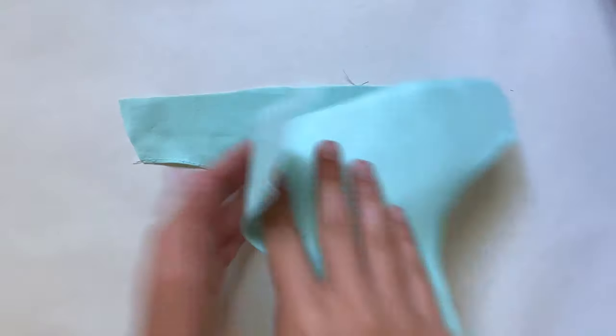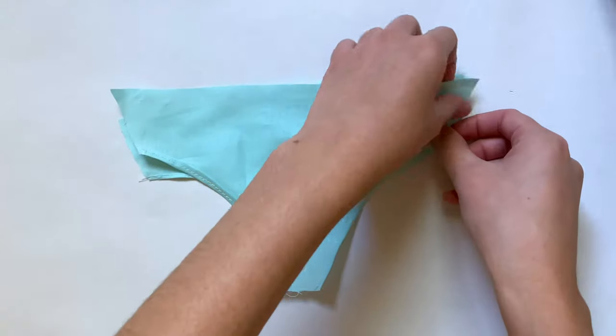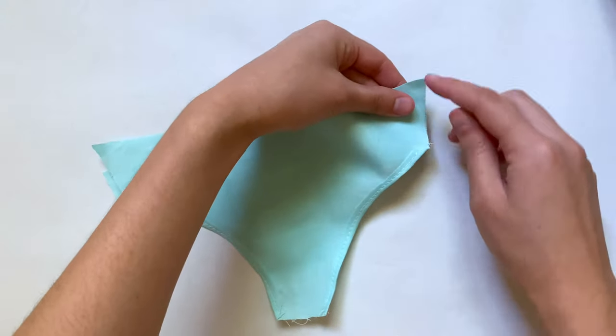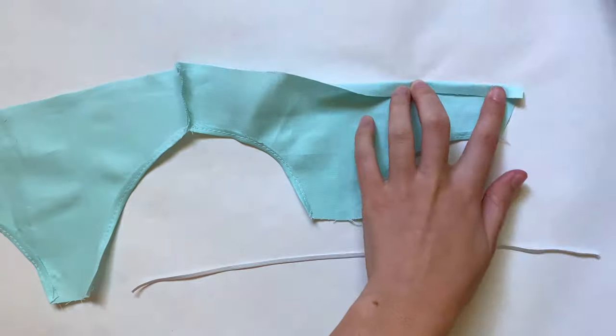After that I'm gonna flip them good side to good side and then sew together one of the sides. It'll be slanted like this. Now I'm gonna flip this over and hem the top edge of both of these pieces.